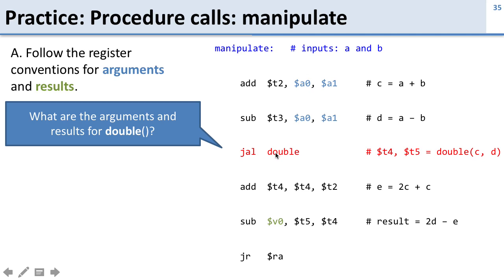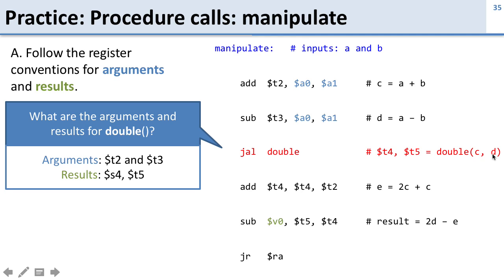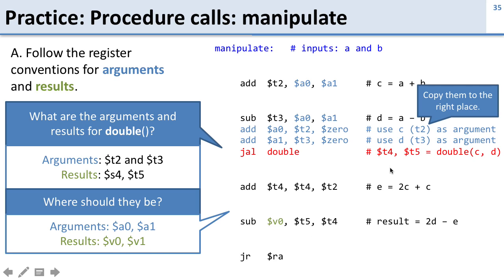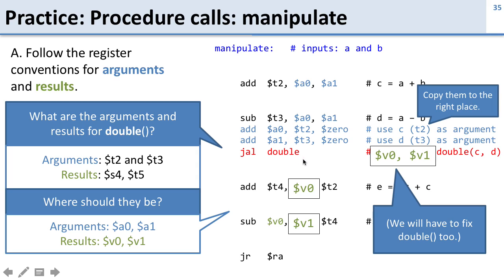Now consider the call to double from within manipulate. Currently, double's inputs c and d are put in t2 and t3, and the results come back in t4 and t5 — these are not in the right place. The arguments should be in a0 and a1, and results in v0 and v1. So we insert copies from t2 and t3 into a0 and a1, change double to return results in v0 and v1, and update the calling code to expect them there.